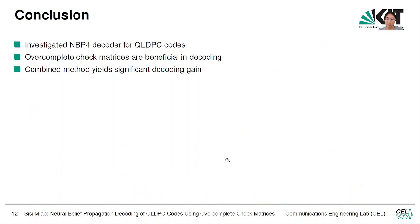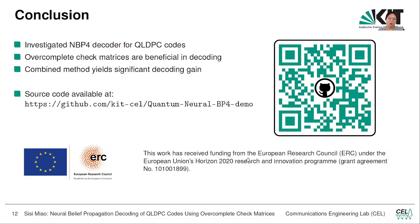This is the end of my presentation. I would like to conclude now. In this work, we investigated neural BP4 decoder for quantum LDPC codes, and we combined it with overcomplete check matrices. Together we get a very good decoding gain which is better than the state of the art. Moreover, if you want to see the implementation of the neural belief propagation decoder, you can go to this GitHub repository or scan the QR code. Or if you are just interested in how to simulate quantum error correction codes, you can also look here. Thank you for your attention. If you have any questions or comments, feel free to leave in the comments below or contact us. Bye-bye.